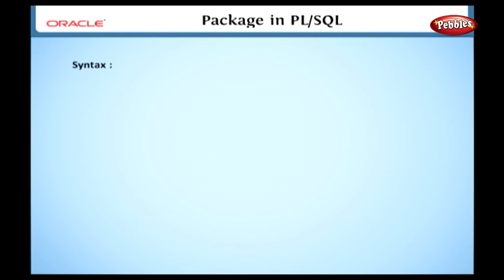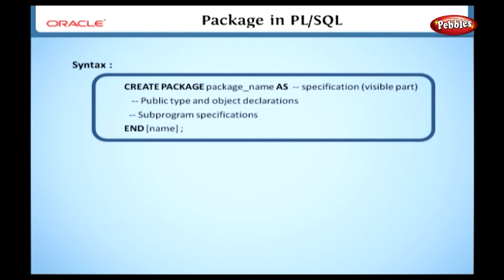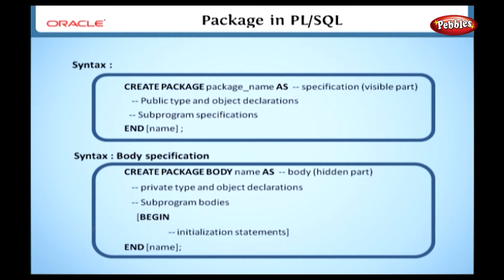Now let's see how to create a package. We must create a package specification part before writing its body. Here is the syntax for the package specification section. 'CREATE PACKAGE' is a keyword. 'Name' specifies the name of the package to be created. We can declare the variables and sub-programs for that package. 'END' specifies the end of a package specification section.